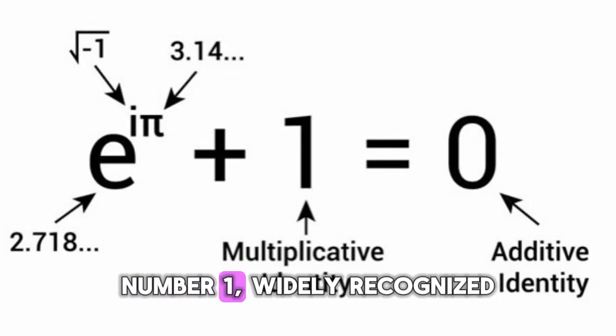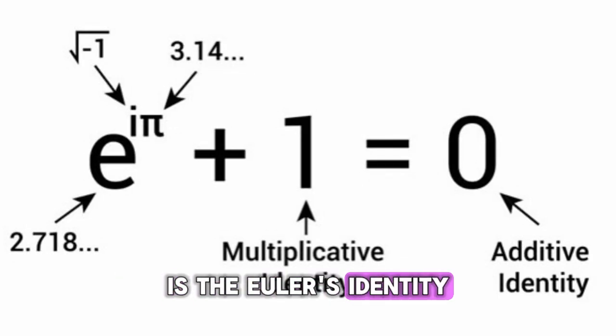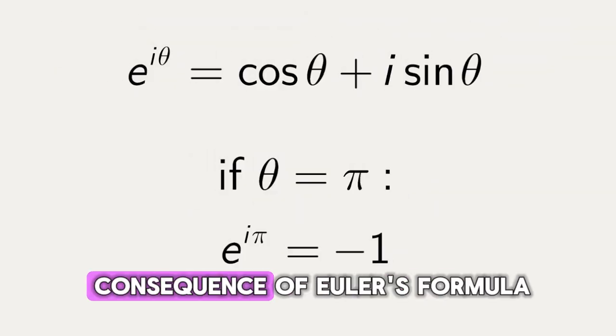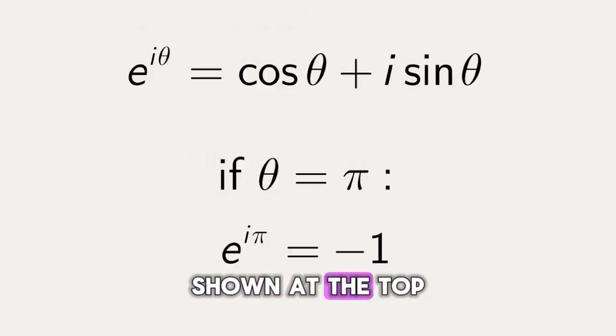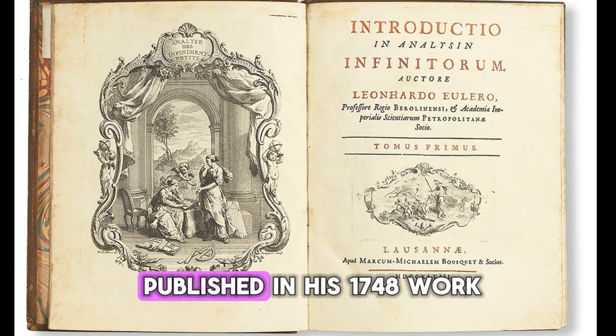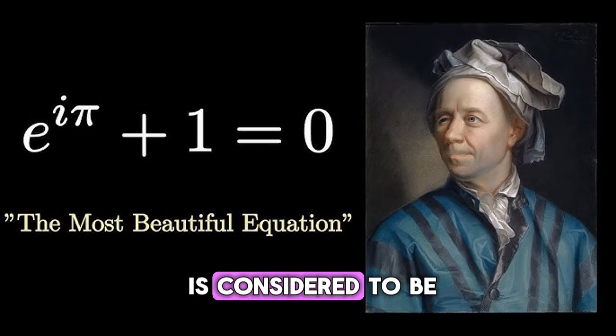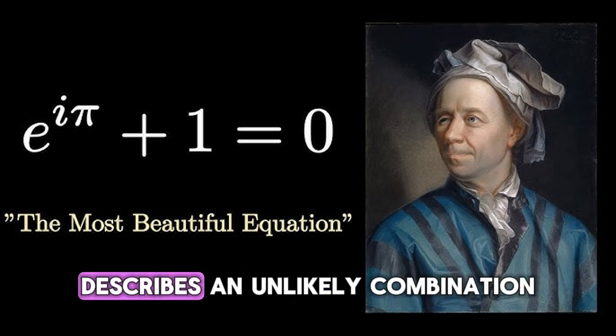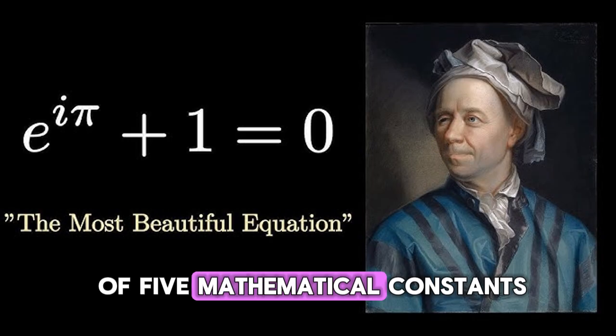Number one, widely recognized, is the Euler's identity. Euler's identity was a consequence of Euler's formula, shown at the top. By substituting theta with pi, the equation was first published in his 1748 work. Euler's identity is considered to be the finest of equations in math classes because it describes an unlikely combination of five mathematical constants.